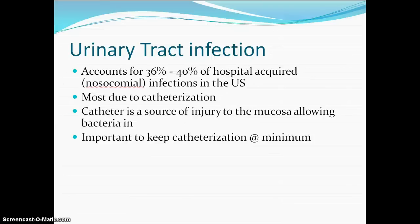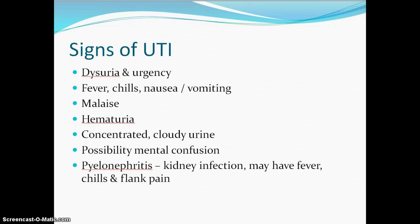The book discusses catheter-associated UTIs. We will be learning how to insert indwelling catheters, and correct technique is vital so we are not causing catheter-associated UTIs that can cost anywhere from $600 to $2,800 to treat. They cause longer hospitalization, and there is morbidity and mortality associated with UTI, plus costs due to longer hospital stays — so we must be very vigilant about preventing them.